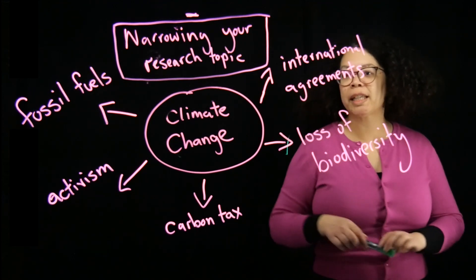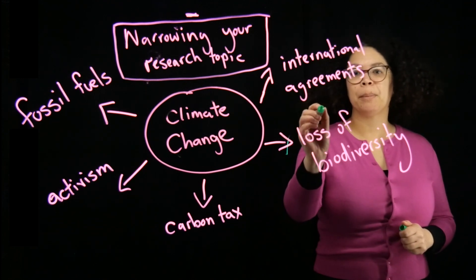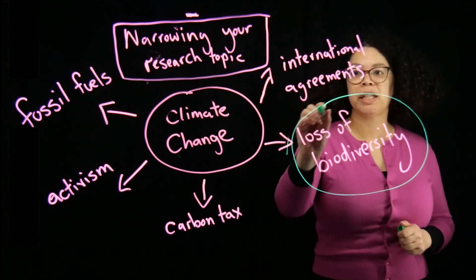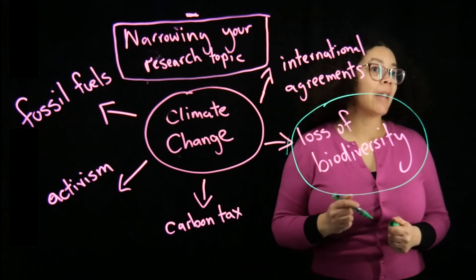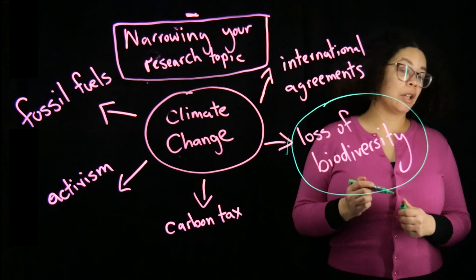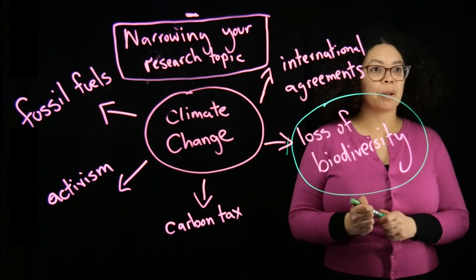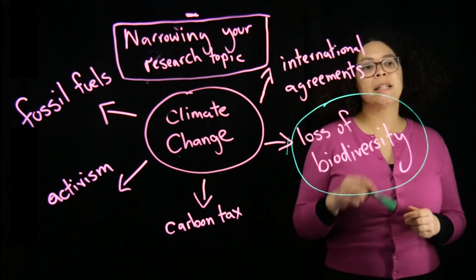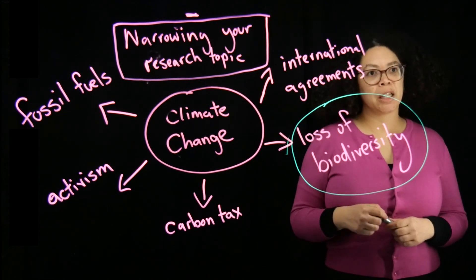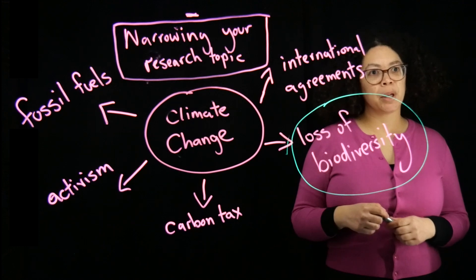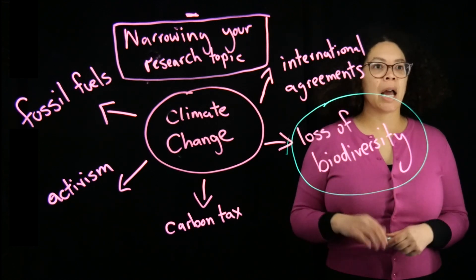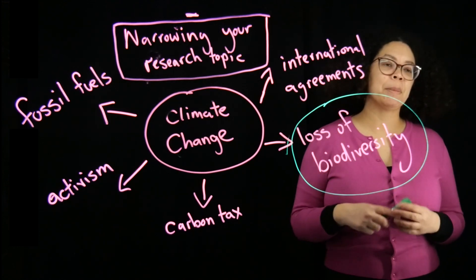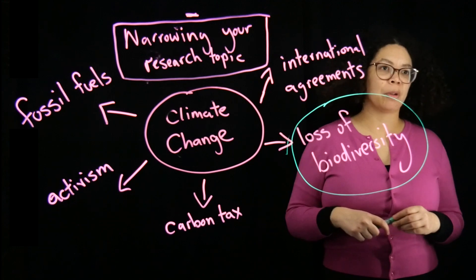For example, if I want to look at the loss of biodiversity — maybe that's of particular interest to me — I'd like to explore that with my research question. So that's going to be my particular area of focus, and that's how I'm going to take the next steps to plan my search strategy.